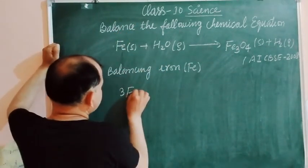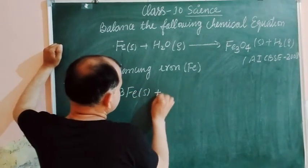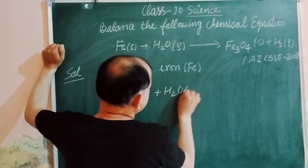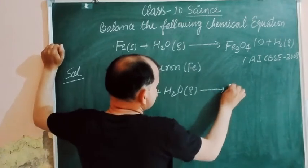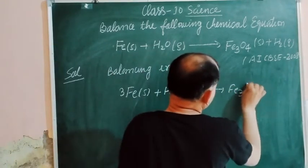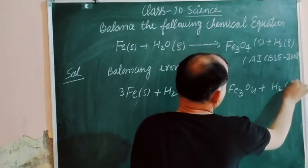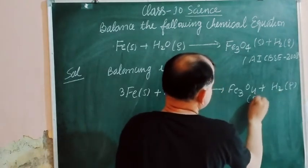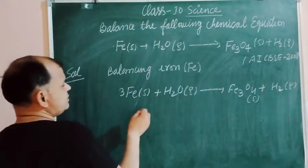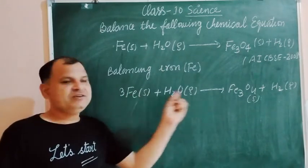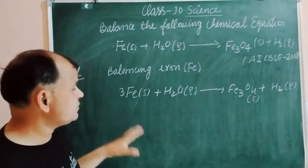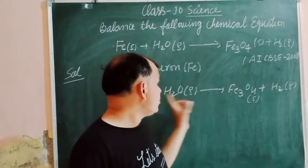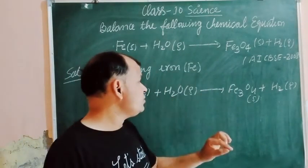So 3Fe plus H2O. Now equation became in this form: Fe3O4 plus H2 gas. Now Fe is balanced from both sides because 3Fe here. Now we balance oxygen.